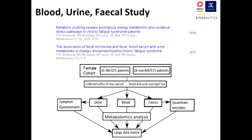We looked at only a female cohort because we get such large differences between males and females when it comes to metabolite changes. We looked at 35 patients versus 24 non-ME/CFS patients — we say non-ME/CFS because 'healthy' is such a hard thing to define. We looked at urine, blood, and faecal samples, took symptom questionnaires at the time, all collected within a 24-hour period. From the faecal samples we also looked at fresh quantitation of the microbes inhabiting the colon. We did metabolomics analysis on all three sample types and put everything into a large data matrix which we could assess as a whole or in individual parts.